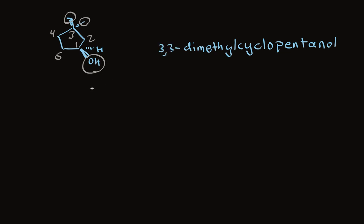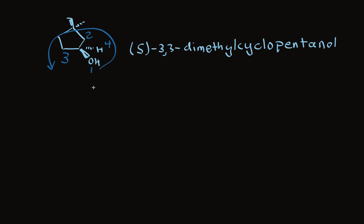There's stereochemistry to assign — R or S. Oxygen is highest priority and hydrogen is lowest. The two ring carbons adjacent to carbon 1 each have CH2 groups, making them identical. Between the remaining two carbons, the more substituted one is priority 2 and the other is priority 3. Going from 1 to 2 to 3, we find ourselves going counterclockwise — that's the S configuration. The final name is S-3,3-dimethylcyclopentanol. Using these systematic rules in this exact order each time, we can unequivocally name even fairly complicated structures.